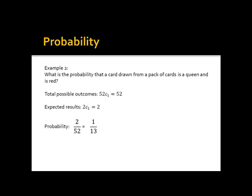Let us proceed to example number 2. What is the probability that a card drawn from a pack of cards is a queen and is red? For the total possible outcomes, since we are only going to draw a card from a pack of cards, the formula is 52C1, which is also equal to 52. And for the expected results, since there are 2 red queens in a deck of cards, the formula is 2C1, which is equal to 2. So the probability is 2 over 52, which is also equal to 1 over 13.